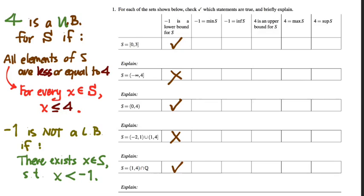Does our first set meet that criterion? It does — every element in the first set, 0 to 3, is less than or equal to 4. The second set also meets it. Every element in negative infinity to 4 is less than or equal to 4. Third set? Sure. Fourth set? Also yes. Fifth set? After all, every element in the fifth set is in the interval from 1 to 4 — only the rational numbers in that interval due to the intersection, but what matters is all those elements are less than or equal to 4. All five sets satisfy that 4 is an upper bound, and none satisfy the negation.